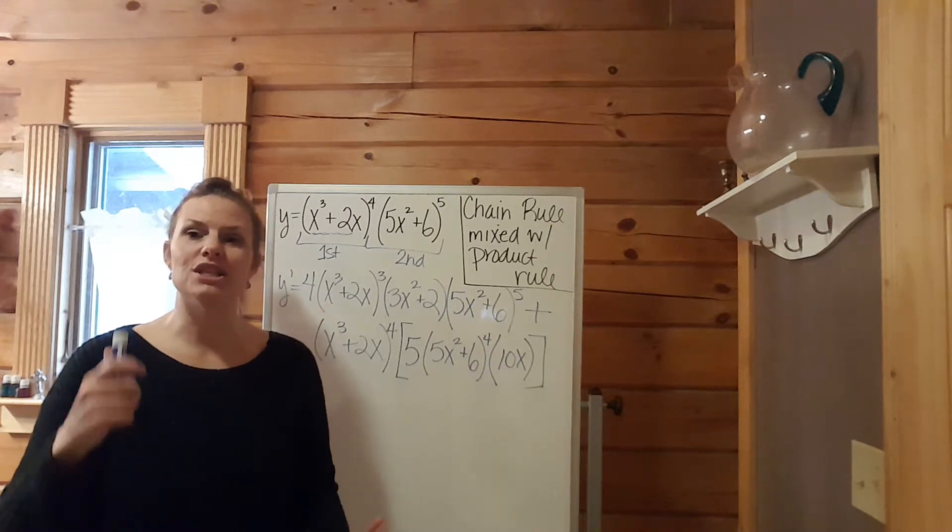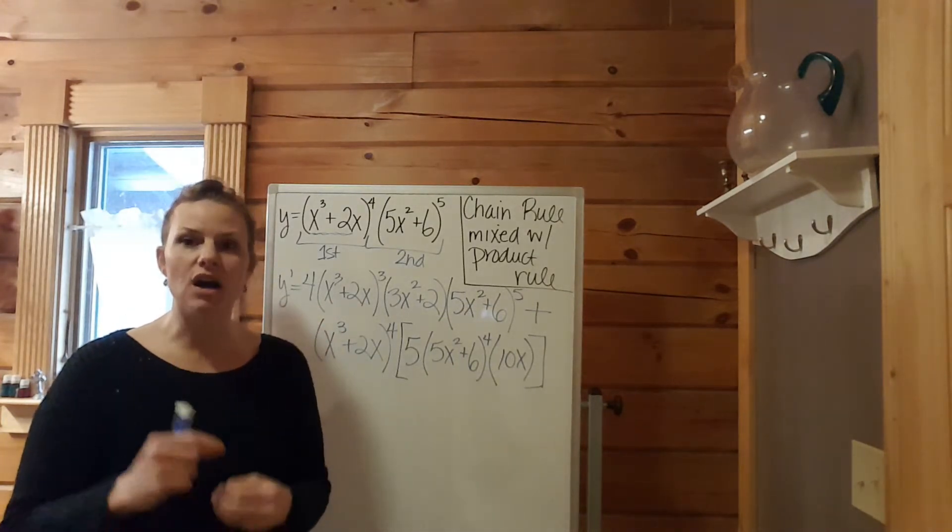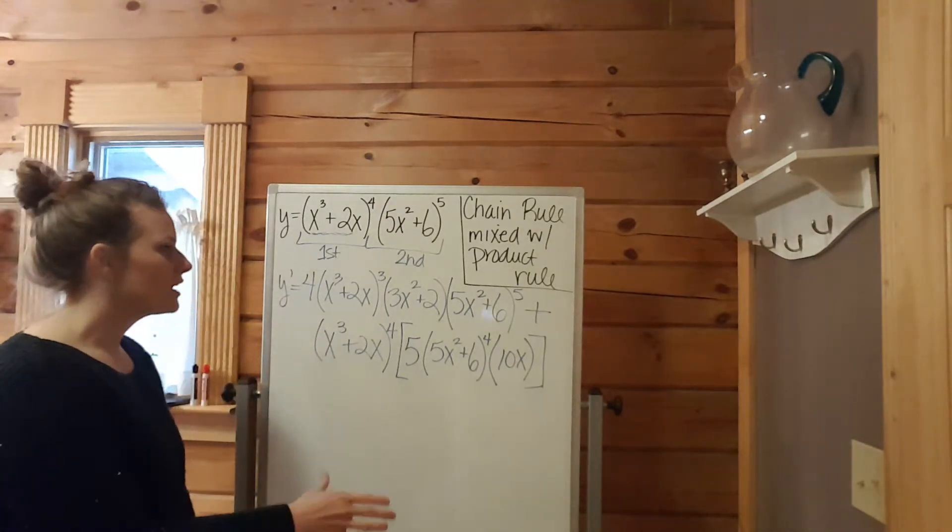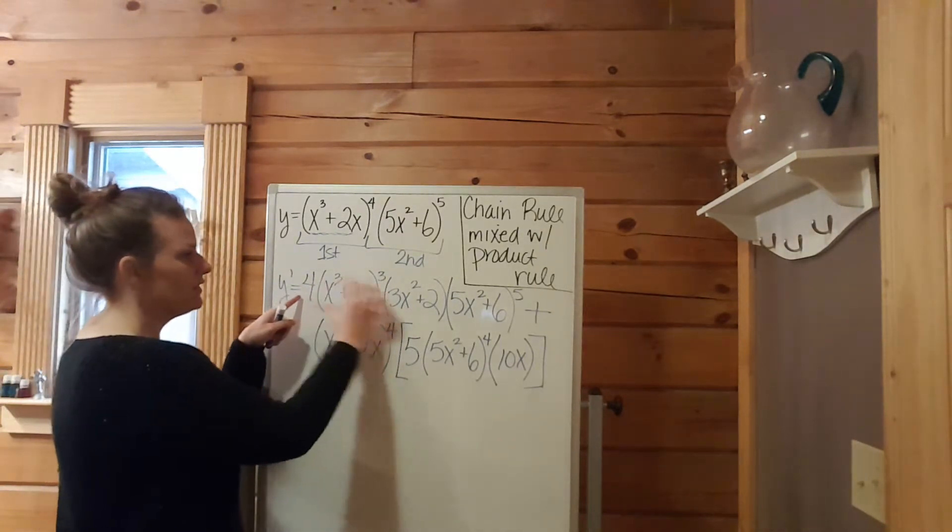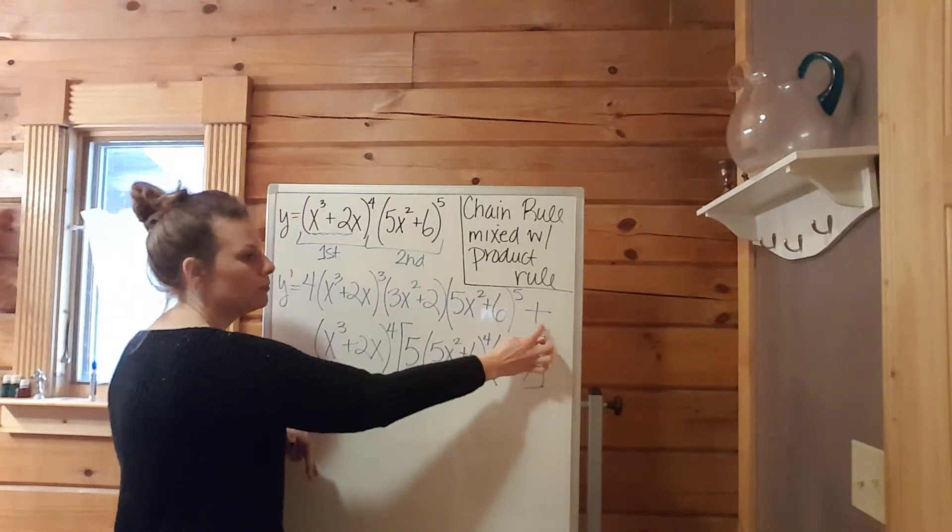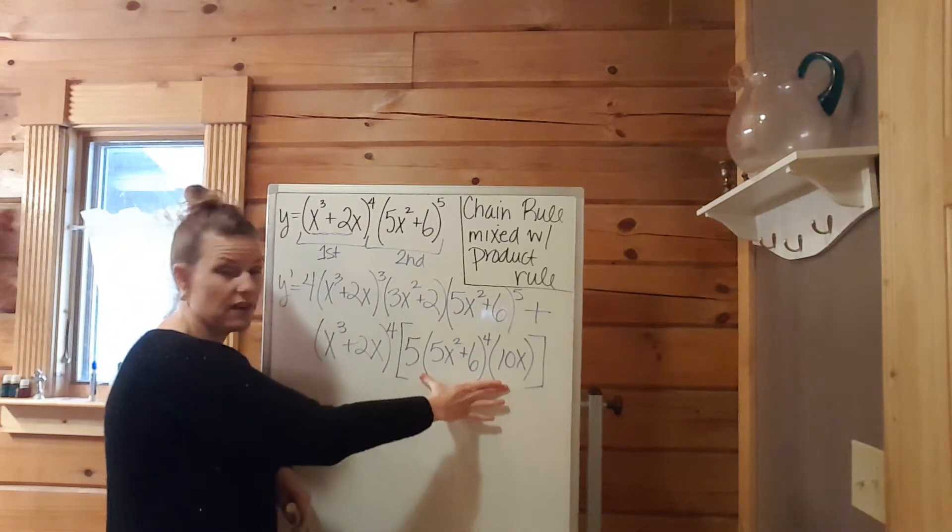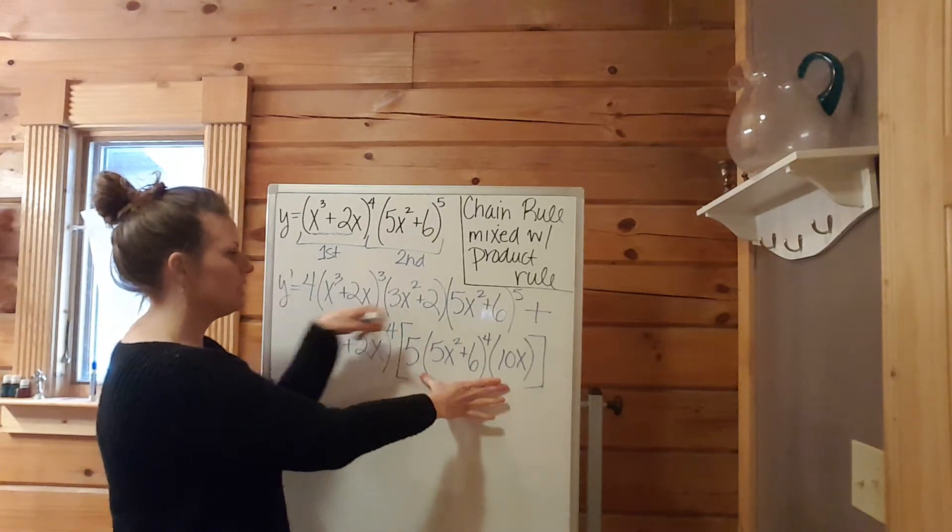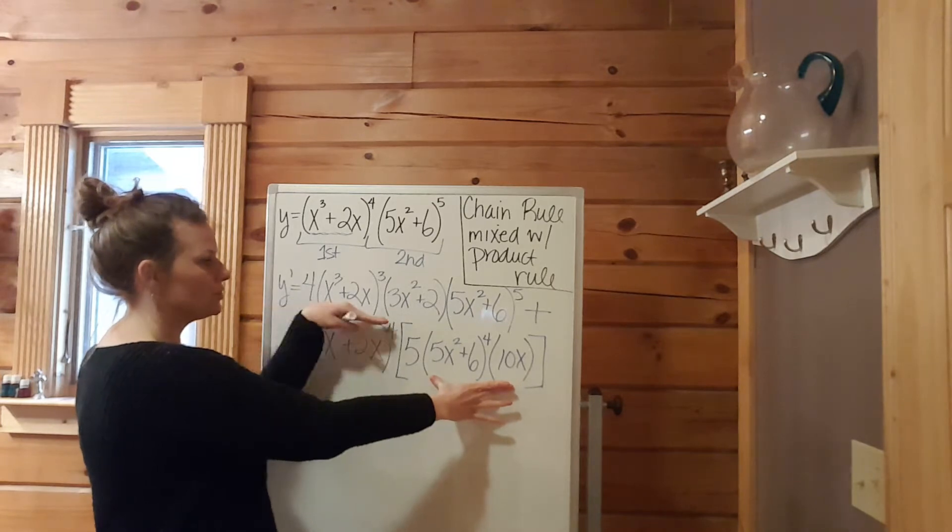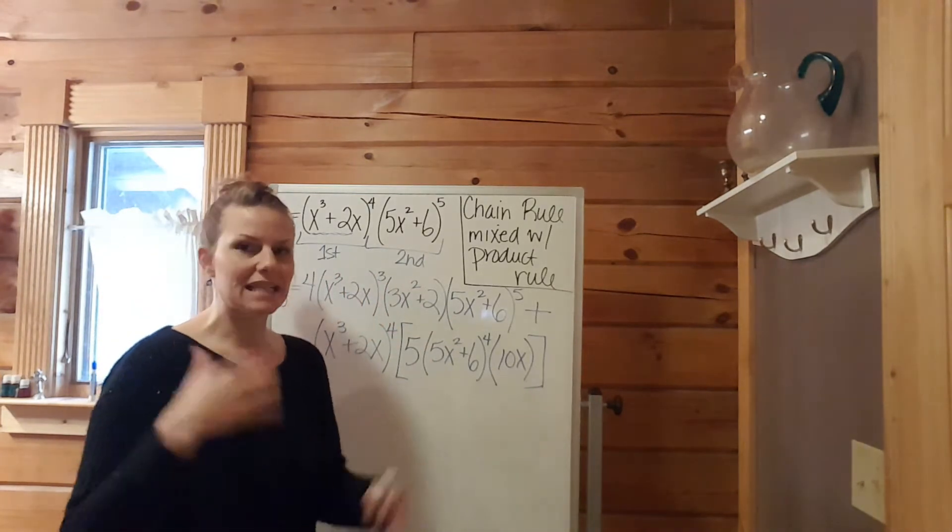Don't let it overwhelm you, just go through the process very carefully, step by step, talk yourself through it. The product rule again: derivative of the first, which is right here, keep the second plus keep the first, derivative of the second. And when we took this and this derivative, we had to employ the chain rule. That's how they mix together.